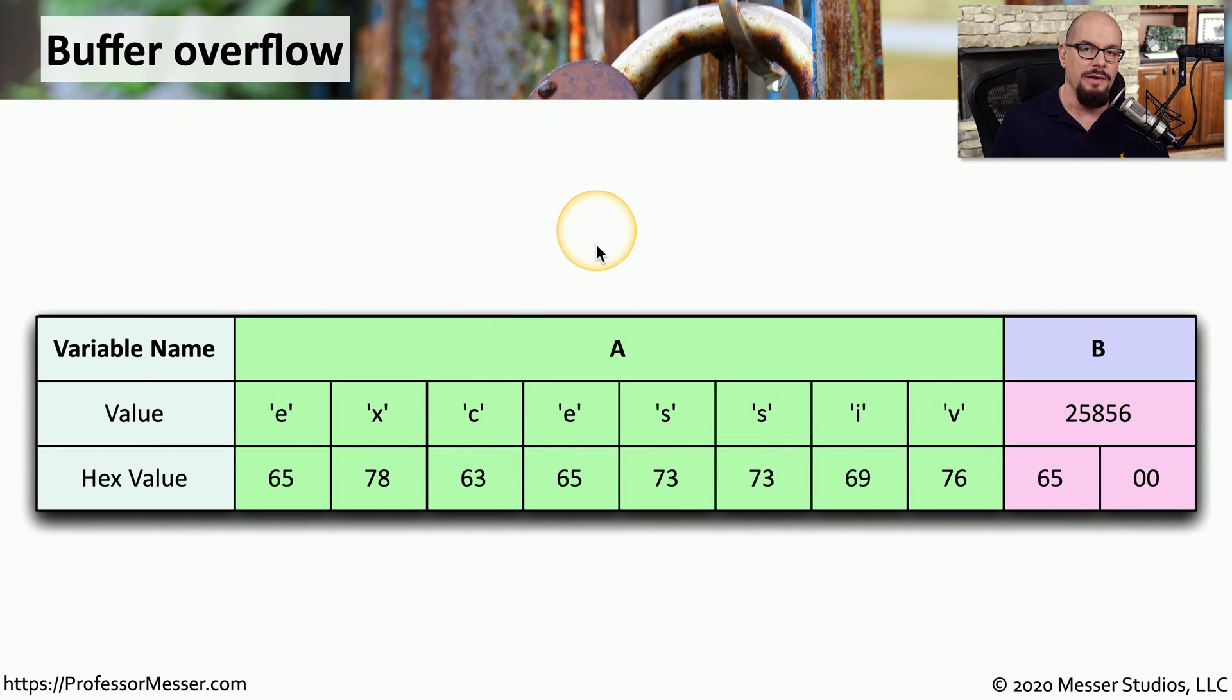Here's the aftermath of a buffer overflow, where we've taken the word excessive and put it into variable A. Now notice that variable A has enough room for the E, X, C, E, S, S, I, V.